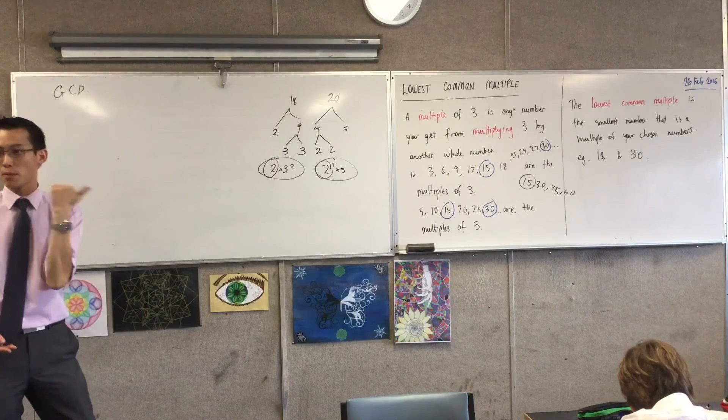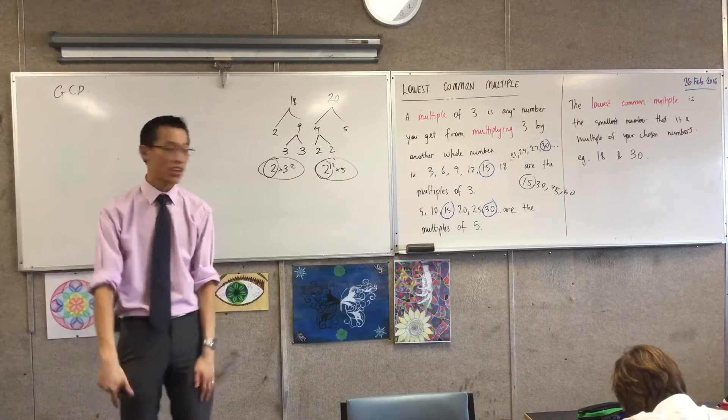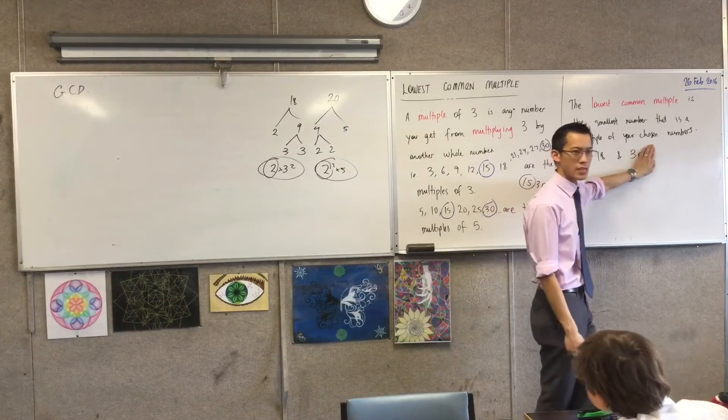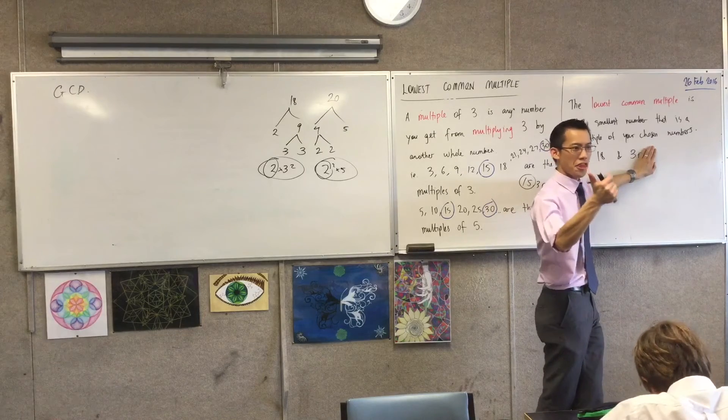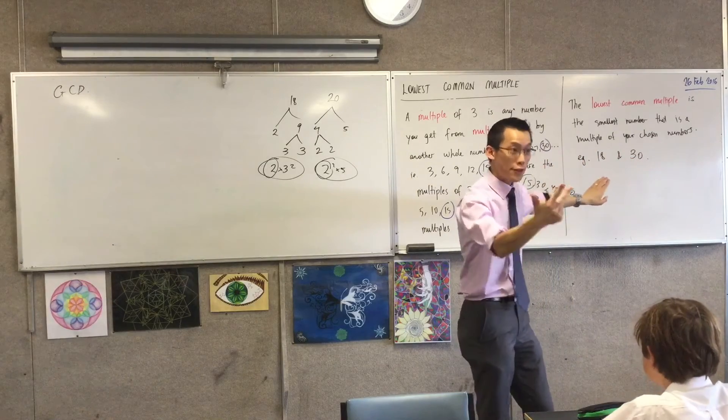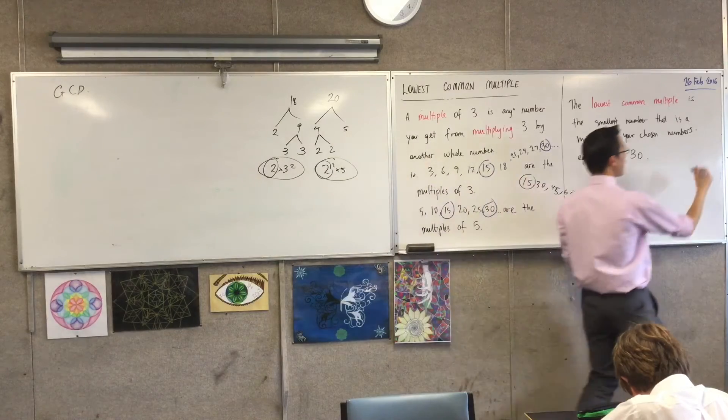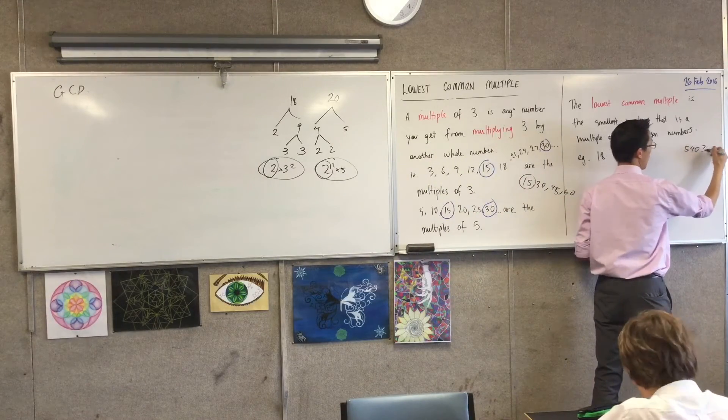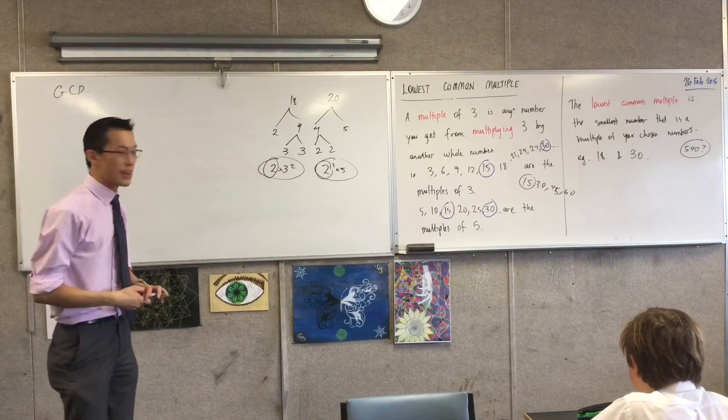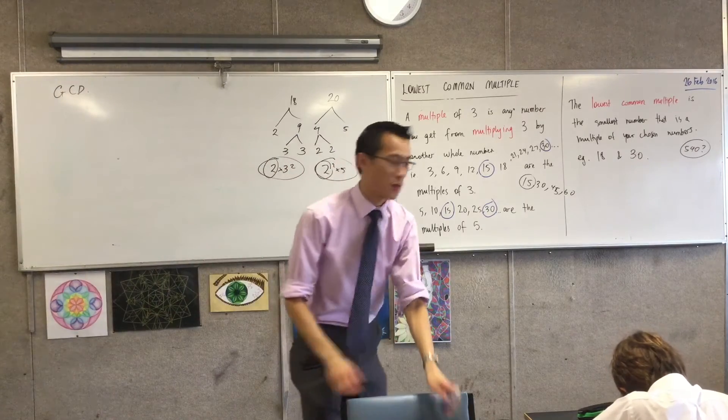If we tried our strategy before, just multiply them together. 18 times 30, it's a bit of a big number, but I think we can do it. Could we do 18 times 3? What's 18 times 3? 18, 36. What's the next one after that? 54. 54. So now if I put the 0 back, it's going to be 540. So 540, I'm going to put a question mark on that one. I know it's a common multiple, but is it the lowest one? Okay? Now, I'm going to show you two ways you can do this. There's a quick way and a slower way. The slower way is easier. I'll show you what I mean.